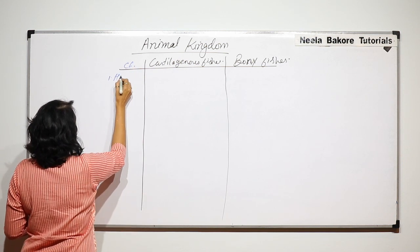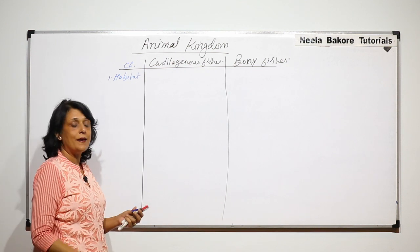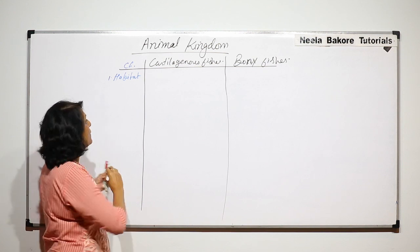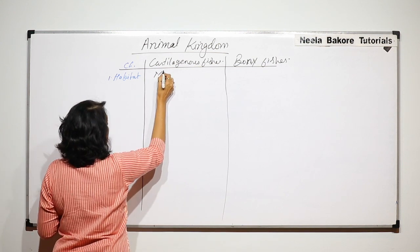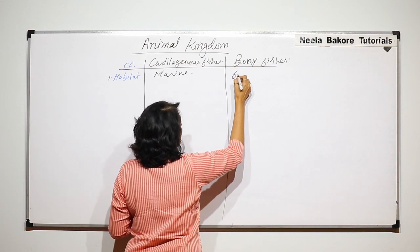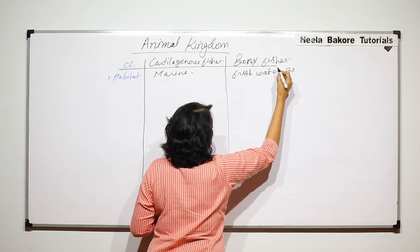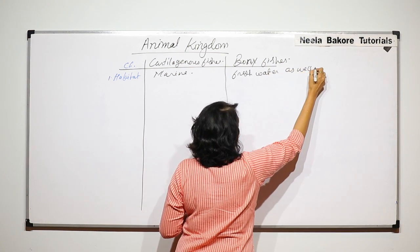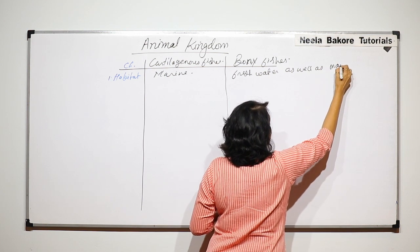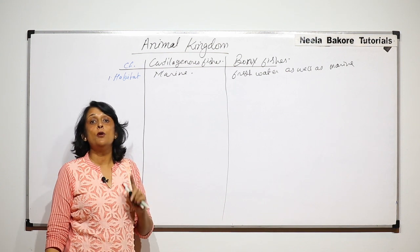The first criterion is habitat — the region or waters in which these fishes are found. Cartilaginous fishes are purely marine, whereas bony fishes are found in fresh water as well as oceans. That means bony fishes are both fresh water and marine, while cartilaginous fishes are purely marine.